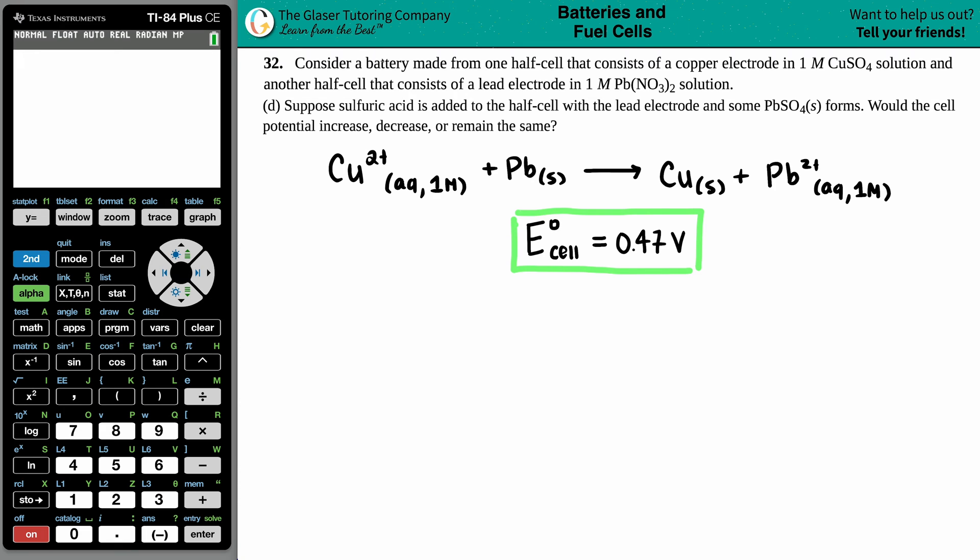Number 32, consider a battery made from one half-cell that consists of a copper electrode in one molar CuSO4 solution and another half-cell that consists of a lead electrode in one molar Pb(NO3)2 solution. And then letter D, the question here is suppose sulfuric acid is added to the half-cell with the lead electrode and some PbSO4 solid forms. Would the cell potential increase, decrease, or remain the same?